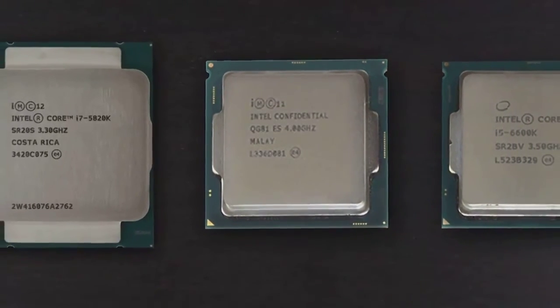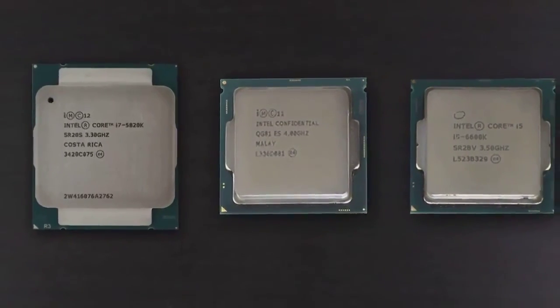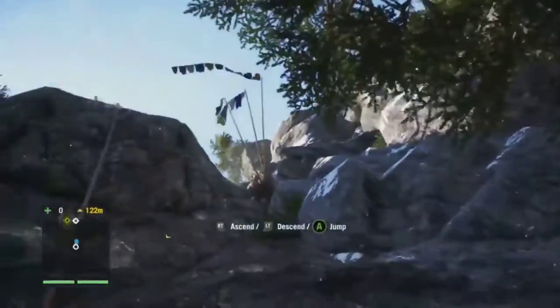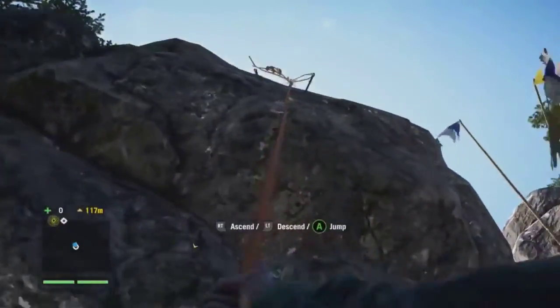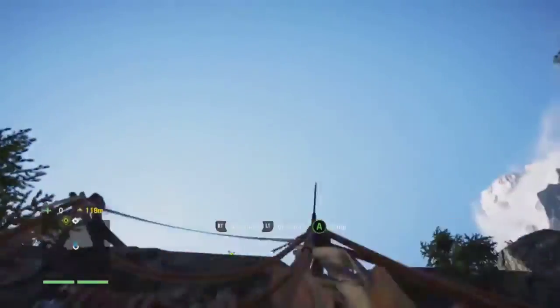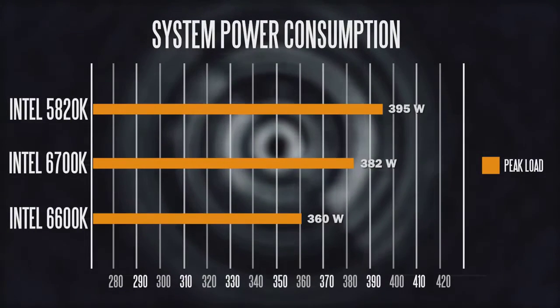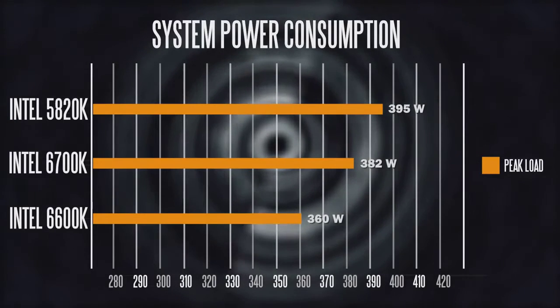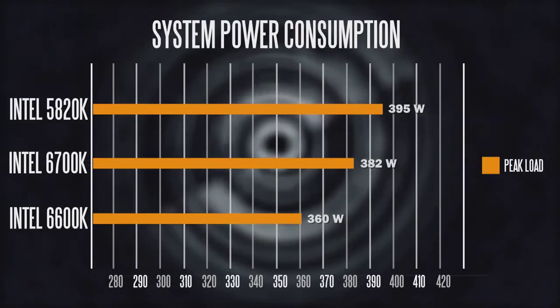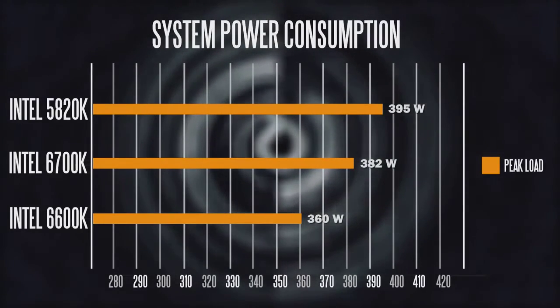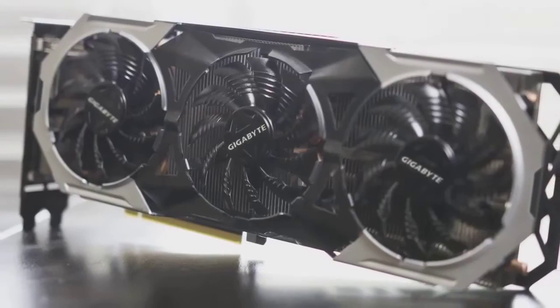The first thing we're looking at is peak power consumption during a prolonged gaming session. We played Far Cry 4 for about half an hour and measured peak power consumption for all three processors. This is the entire system drawing from the wall socket. The 5820K hit about 395 watts peak, about 382 watts on the 6700K, and about 360 watts on the 6600K. Not a massive difference across these CPUs — the biggest power draw is definitely the graphics card, which is the GTX 980 Ti from Gigabyte.